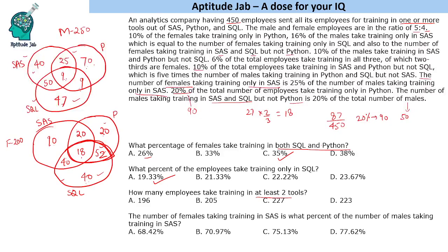The third question asks how many employees take training in at least two tools. We find those taking only one tool and subtract from 450. Only-one-tool counts: 40 + 70 + 17 + 10 + 20 + 47 + 40 = 244... totaling 227. So employees taking at least two tools = 450 − 227 = 223.